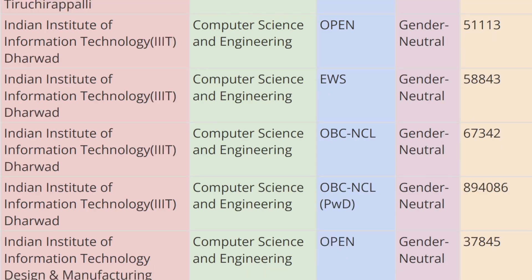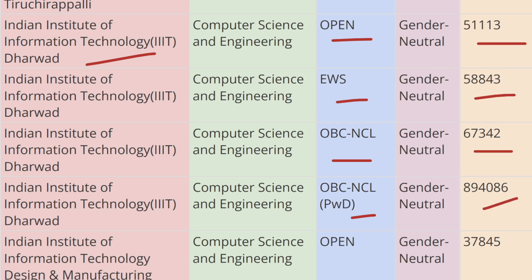Next moving ahead, we have IIIT Dharwad. For Open category the cutoff rank is 51,113, for EWS category the closing rank is 58,843, and for OBC-CL the cutoff rank is 67,342. For OBC-CL PWD category, the cutoff rank is 8,94,086.